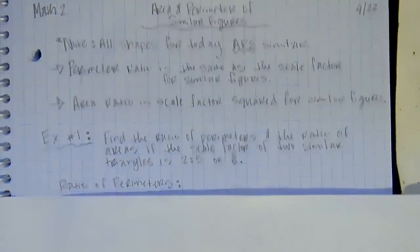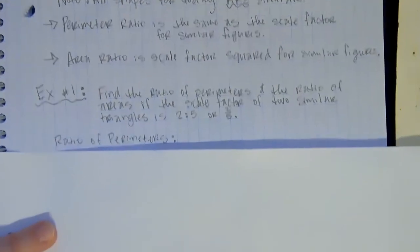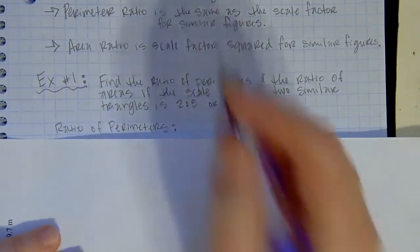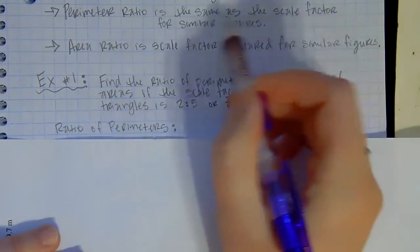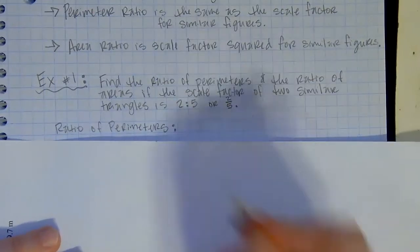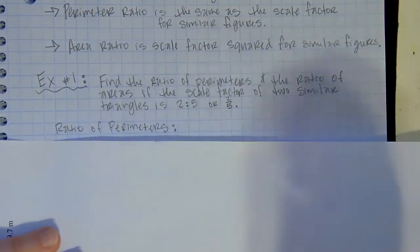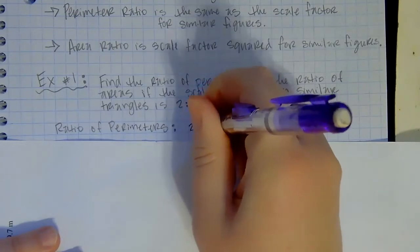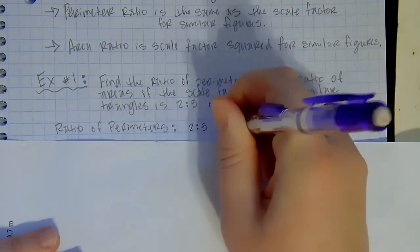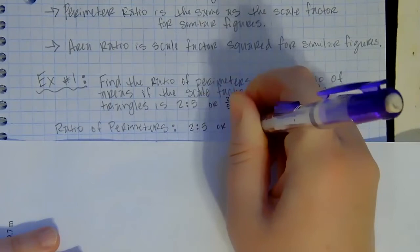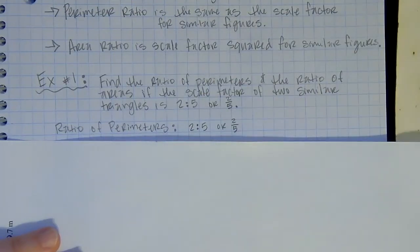So our ratio of perimeters first. Remember these are similar figures. We learned our ratio of perimeters is exactly the same as the scale factor. So if the scale factor is two to five, then that means the ratio of perimeters is also two to five or I could write it as two over five. That's it, it's exactly the same.